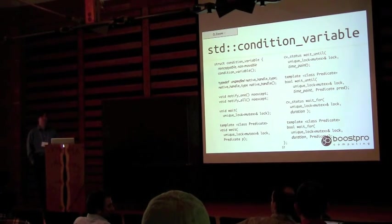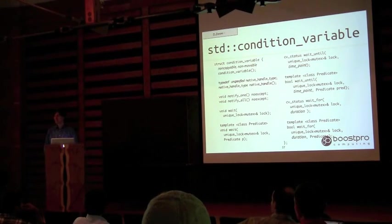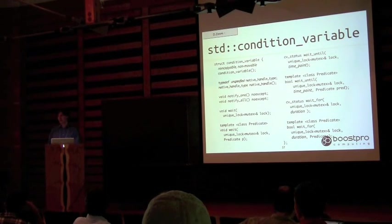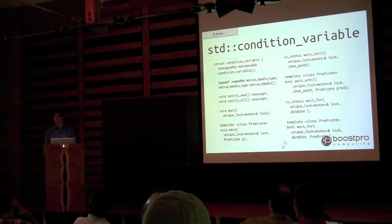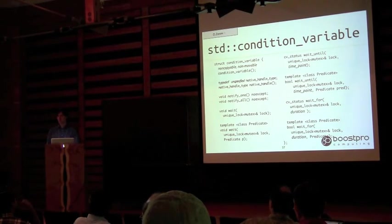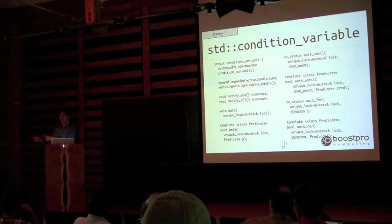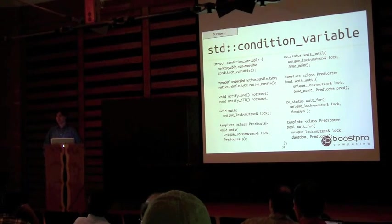On whether join throws: if you call join on a non-joinable thread it's going to terminate. Join itself doesn't throw an exception — it's the future from the thread that provides you with the exception. The asynchronous execution cannot leak a thread; it provides exception information through the future.